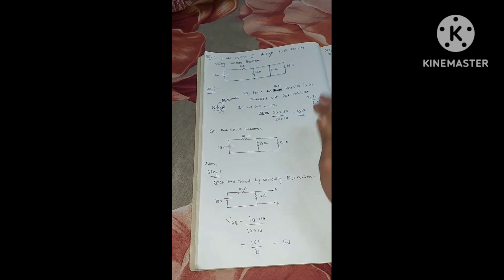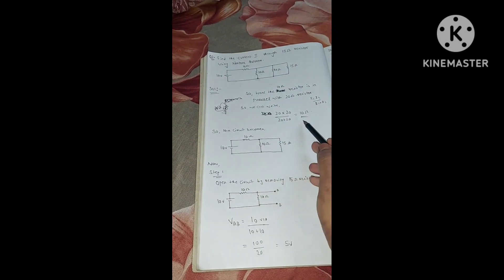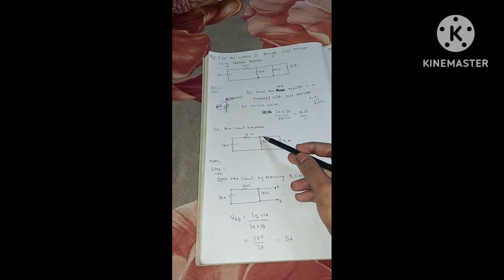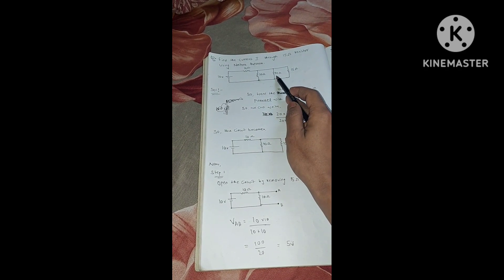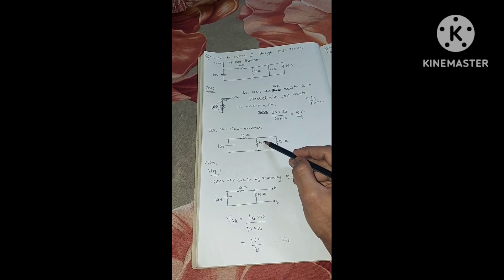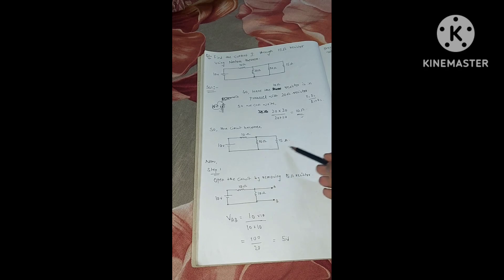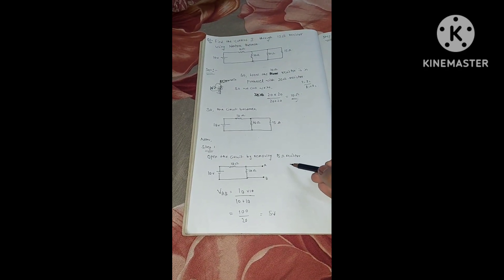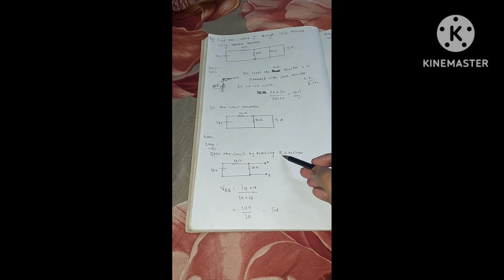So we can make an equivalent circuit written as: 10 volts, 10 ohms in series, and the derived 10 ohms for the two parallel resistors replaced by one 10 ohm resistor, plus the 15 ohm load resistor. In the exam if it is 40 ohm and 40 ohm, just apply this formula, get the value, and put it in the circuit.